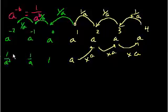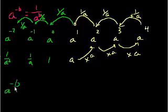And you could just keep doing this pattern all the way to the left, and you would get a to the minus b is equal to 1 over a to the b.